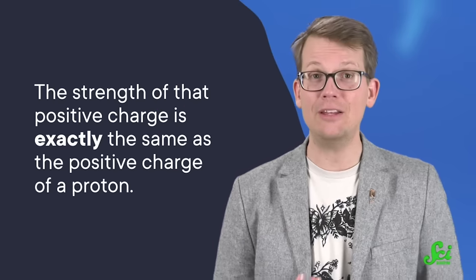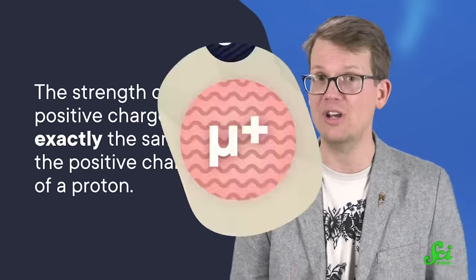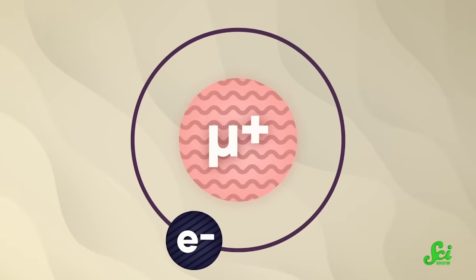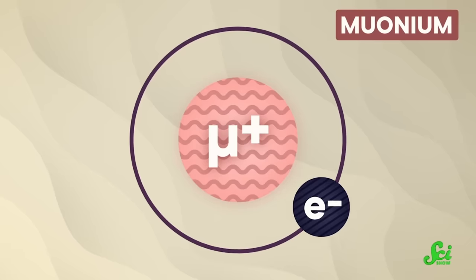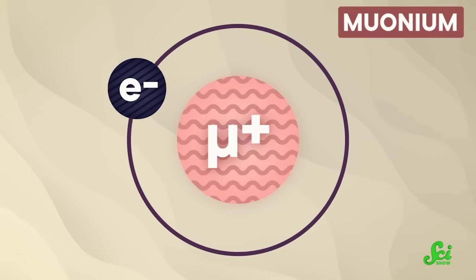And here's the key point. The strength of that positive charge is exactly the same as the positive charge of a proton. So if a regular old electron is in orbit around an antimuon, that is a muonium atom. Those things don't annihilate each other because they're not each other's matter-antimatter counterpart.